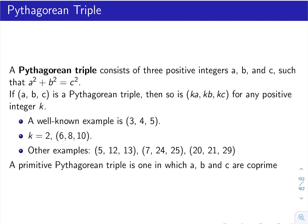Now, if we look at a, b, c as positive integers, and if they satisfy this equation, we call them a Pythagorean triple. The first famous one would be 3, 4, 5.